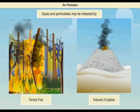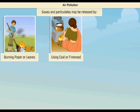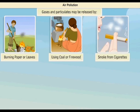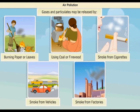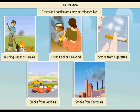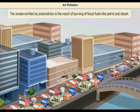Human activities like burning paper or leaves, using coal or firewood for cooking, smoke from cigarettes, vehicles and chimneys of factories also add gases and particulates to air and pollute it. The smoke emitted by automobiles is the result of burning of fossil fuels like petrol and diesel.